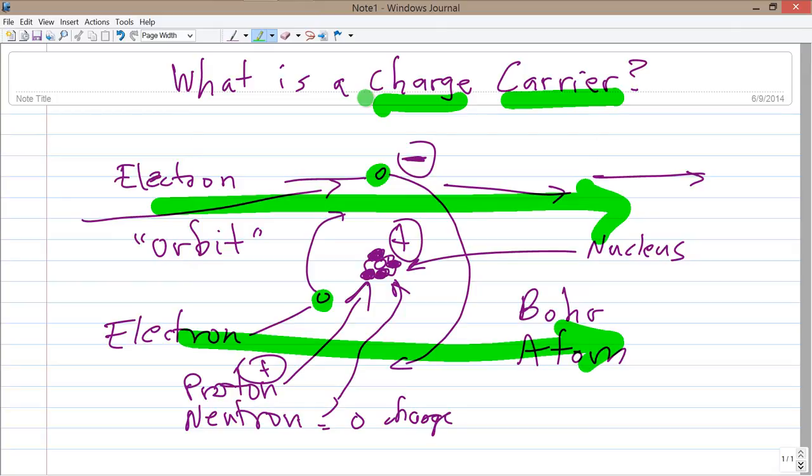Now electrons aren't the only charge carriers that can exist. In most electrical situations, electricity phenomena that we observe today, electrons are the charge carriers. But if you have a bunch of high-speed protons ejected from the sun, say towards the Earth, those protons have a positive charge and they are therefore charge carriers.